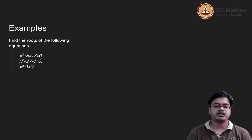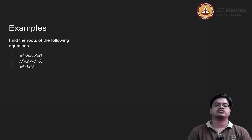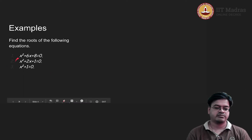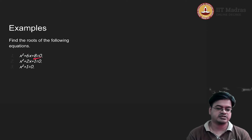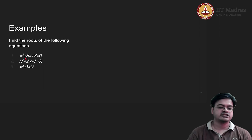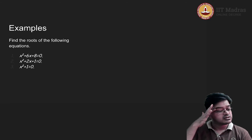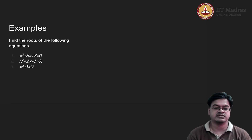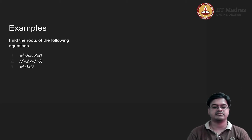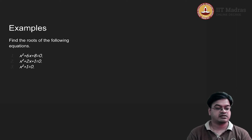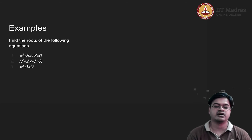In order to plot a quadratic function, we need to understand the axis of symmetry. For the first example, x² + 6x + 8, a = 1, b = 6, and c = 8. The y-intercept is 8, and the axis of symmetry is x = -b/2a = -6/2 = -3. So the axis of symmetry is x = -3, and since a is positive, the curve opens up and attains a minimum.